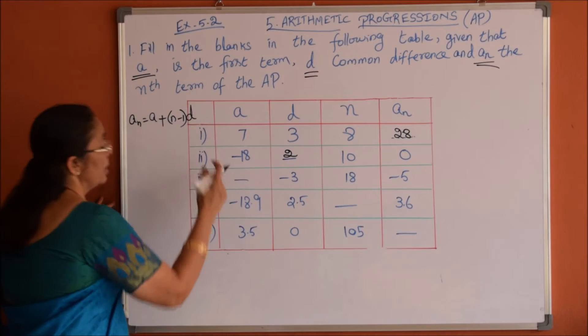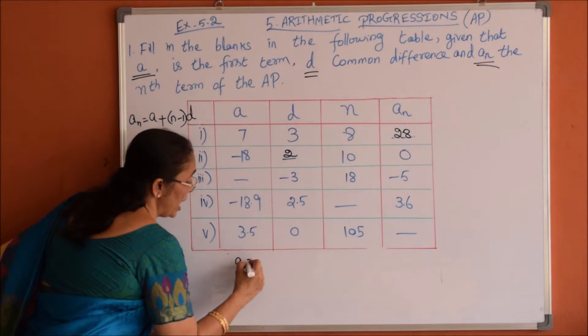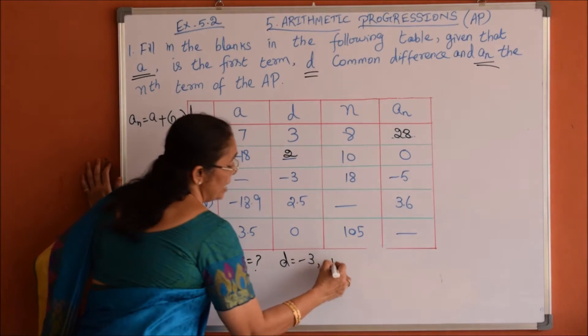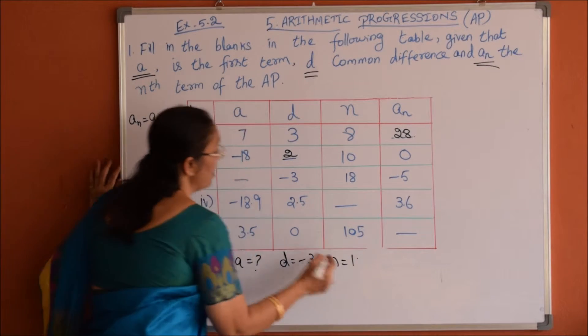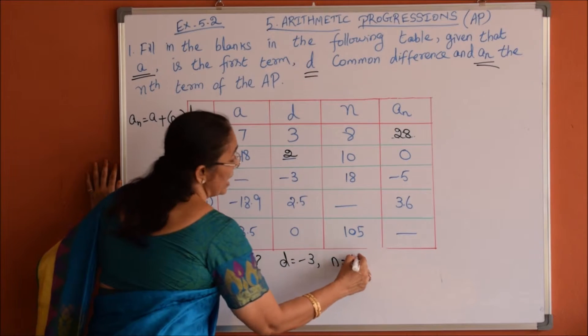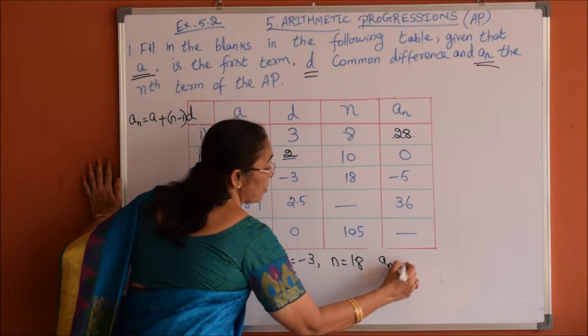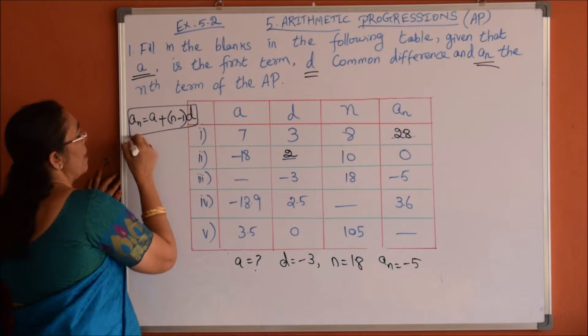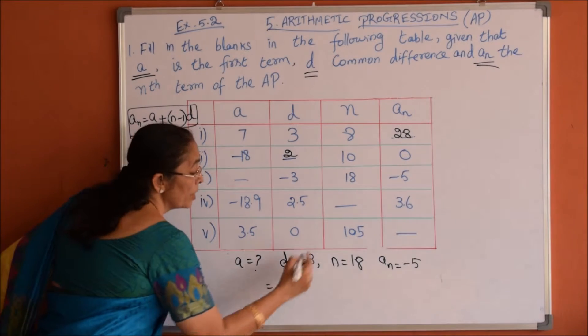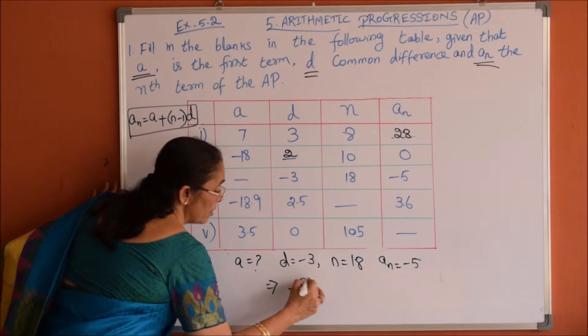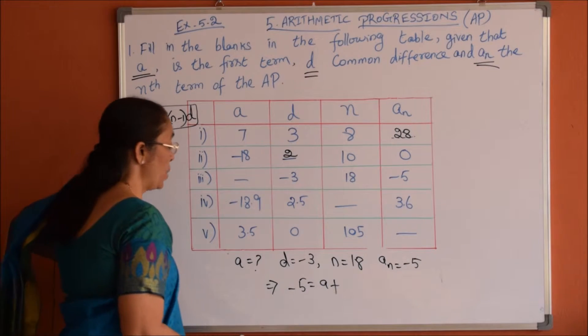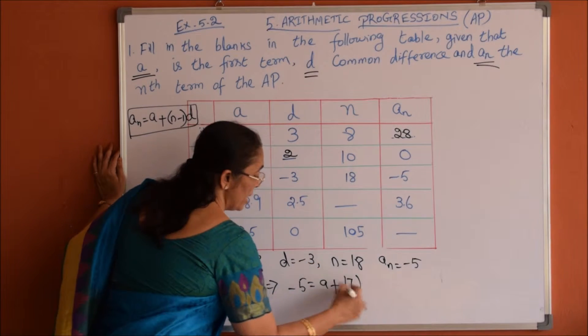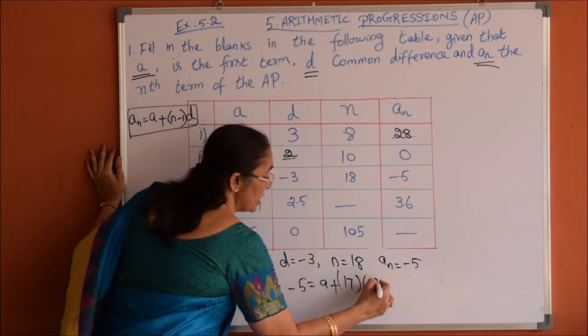For the third one, we have to find a. Common difference is given as minus 3, n is given as 18, and An is minus 5. Using the formula, An equals a plus (n minus 1) times d, we get minus 5 equals a plus 17 times minus 3.